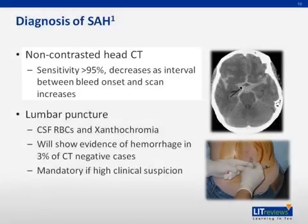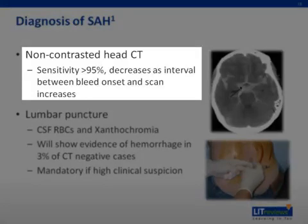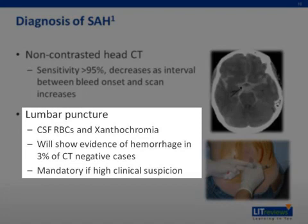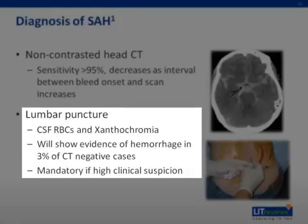Diagnosis of subarachnoid hemorrhage. The modality of choice is computed tomography, CT scan of the brain. This has a high sensitivity and will correctly identify over 95% of cases, especially on the first day after the onset of bleeding. Magnetic resonance imaging, or MRI, may be more sensitive than CT scan after several days. Lumbar puncture, in which cerebrospinal fluid is removed with a needle from the lumbar sac, will show evidence of hemorrhage in 3% of people in whom a CT scan was normal. Lumbar puncture is therefore regarded as mandatory in people with suspected subarachnoid hemorrhage if imaging is negative. Typically, four tubes of CSF are obtained. If an elevated number of red blood cells is present equally in all bottles, this indicates a subarachnoid hemorrhage. If the number of cells decreases per bottle, it is more likely that this is due to damage to a small blood vessel during the procedure, known as a traumatic tap.